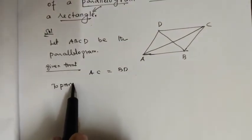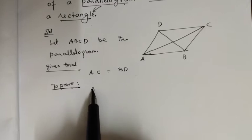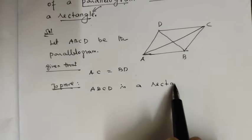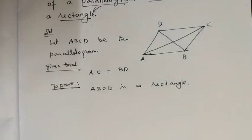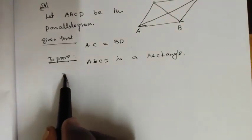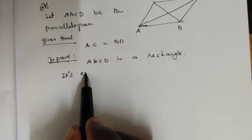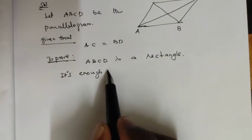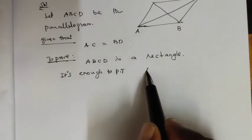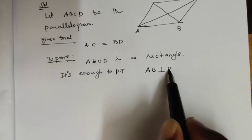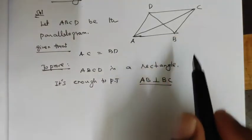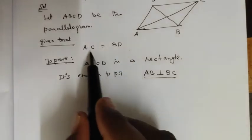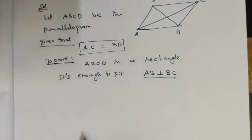Here we know ABCD is a rectangle. That means ABCD is the same one. It is enough to prove that AB is equal to BC. That means ABCD is equal to BC.